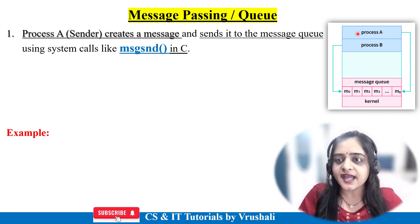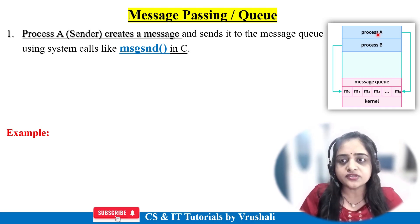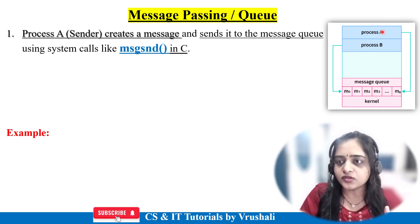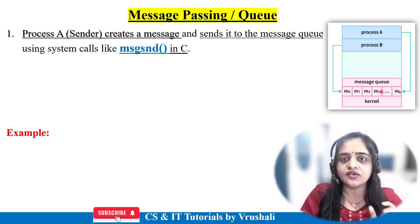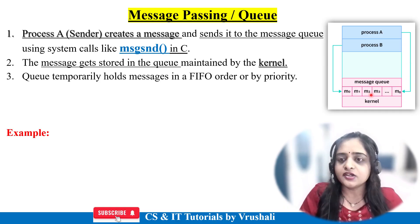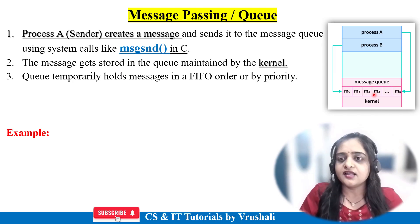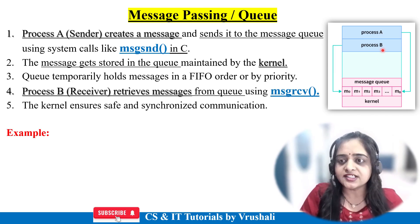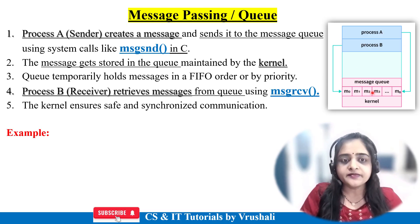Assume Process A is the sender and Process B is the receiver. Process A wants to send a message to Process B via the queue. The first step is Process A sends the message through the queue using the message send system call in C programming. This message is placed in the queue, which is managed by the kernel, and the kernel stores all messages in first-in first-out format. Process B then reads this message using the message receive system call, receiving it through the queue. The kernel ensures safe and synchronized communication between Process A and Process B.